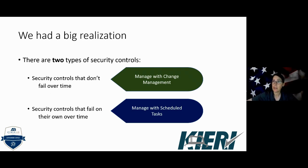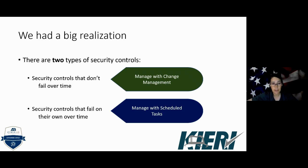Way back in 2020, we realized we could structure this program with two basic types of tasks. There are security controls — the 800-171 requirements — that when you implement them correctly, they just keep working. For example, if you set up your firewall and put together all those access control lists properly, they're just going to keep working. It is extremely unlikely that tomorrow your firewall is going to just decide to stop blocking traffic.